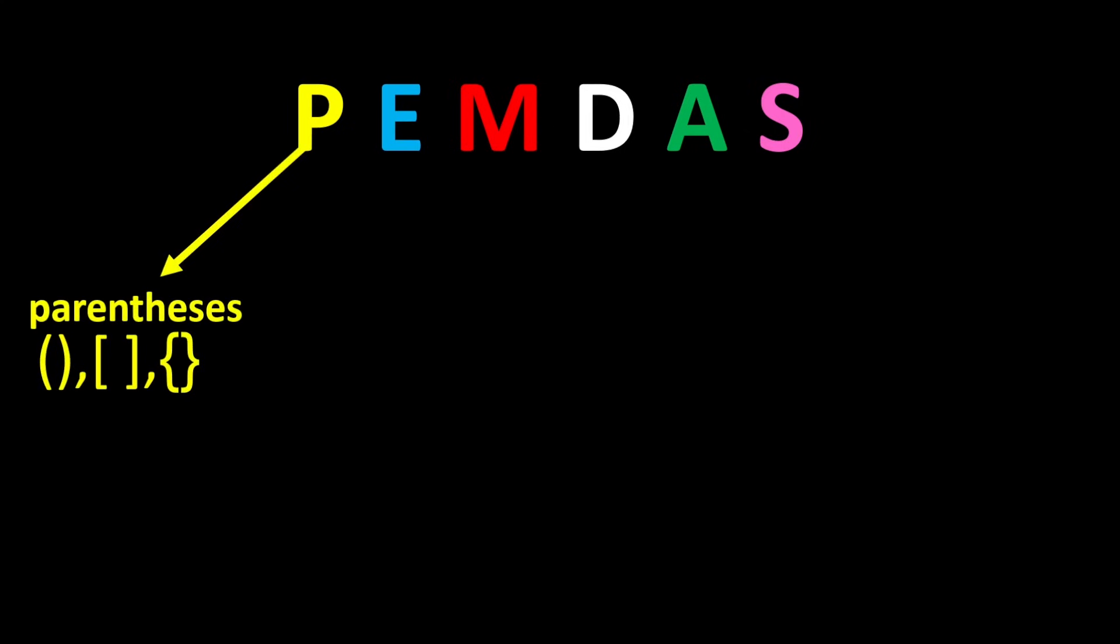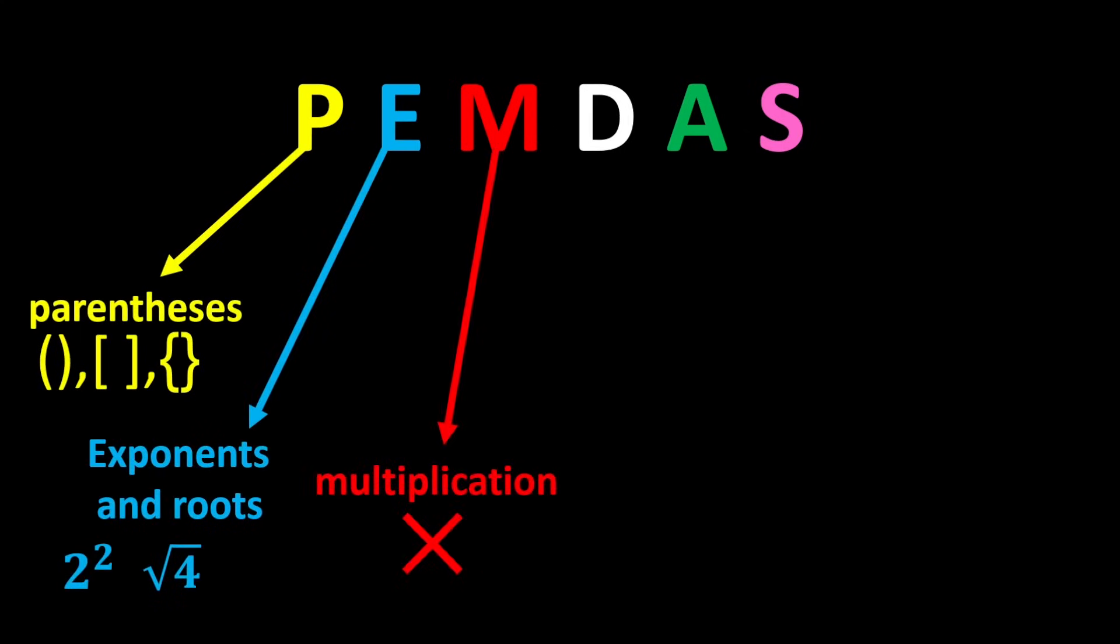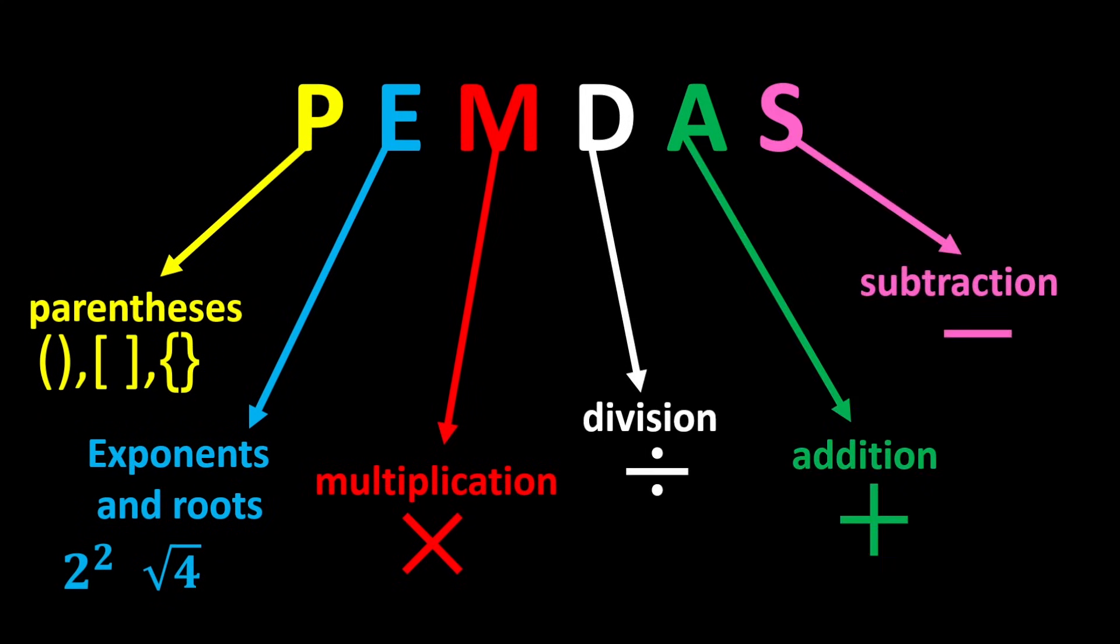P stands for parentheses, E stands for exponents and roots, M stands for multiplication, D stands for division, A stands for addition, and S stands for subtraction. According to PEMDAS, in any mathematical expression we first calculate parentheses, then exponents and roots, then multiplication and division, and finally addition and subtraction.